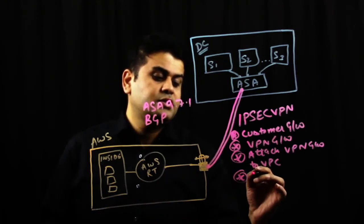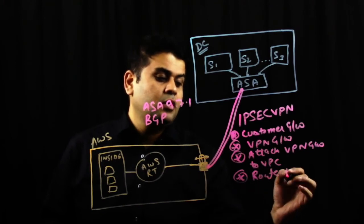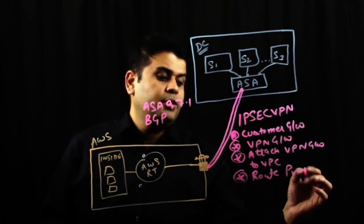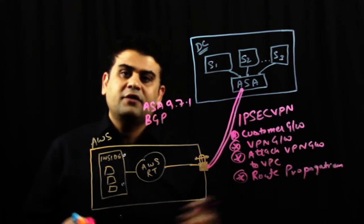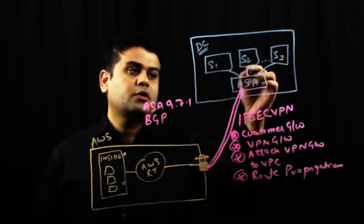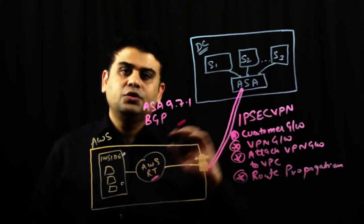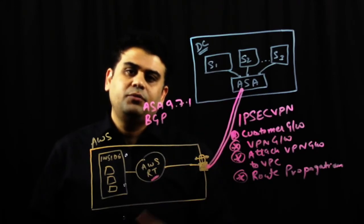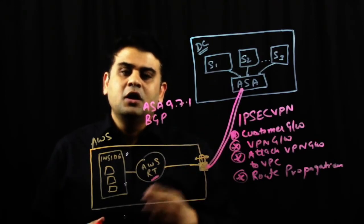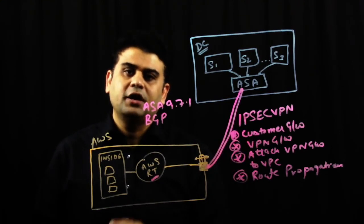Next important step is to enable route propagation. The moment you have this route propagation enabled, all the routes that you have here are learned in your AWS route table as well. So using this route table, you will send your VPN traffic. So VPN traffic is based on routes which are learned using the VTI interface.